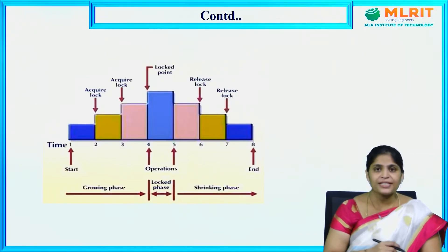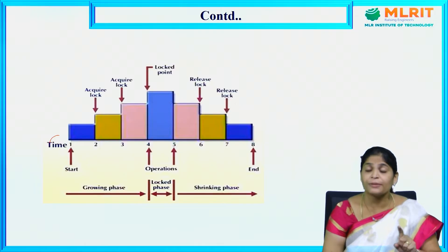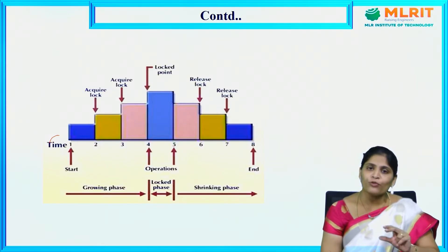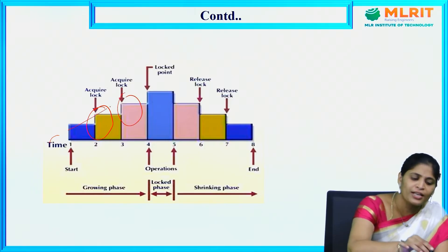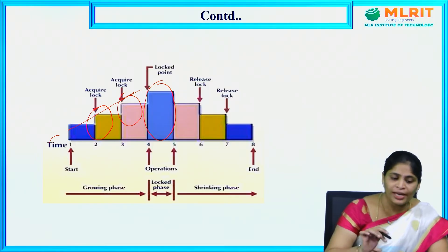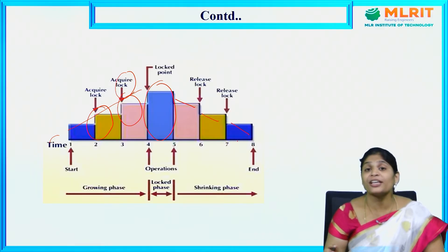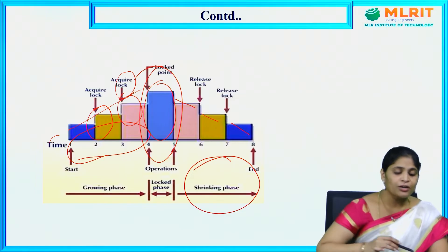Looking at the diagrammatic representation, we have three phases: first, requesting locks (asking permission); second, acquiring the locks; and third, releasing the locks. The growing phase covers the acquisition of locks up to the lock point. After the lock point, whatever locks have been acquired are released one by one — that is the shrinking phase. The moment all locks are held is called the locked phase.